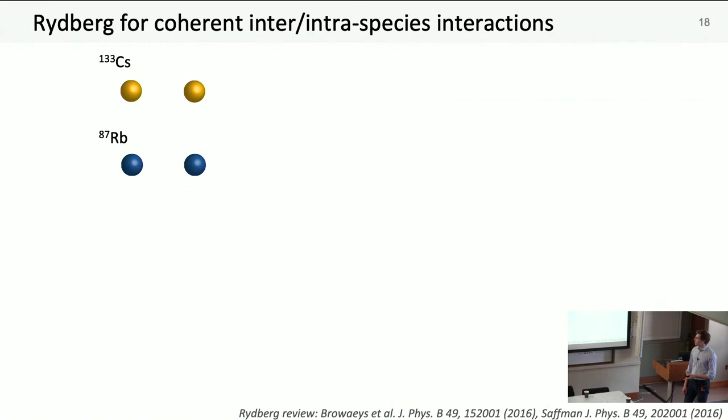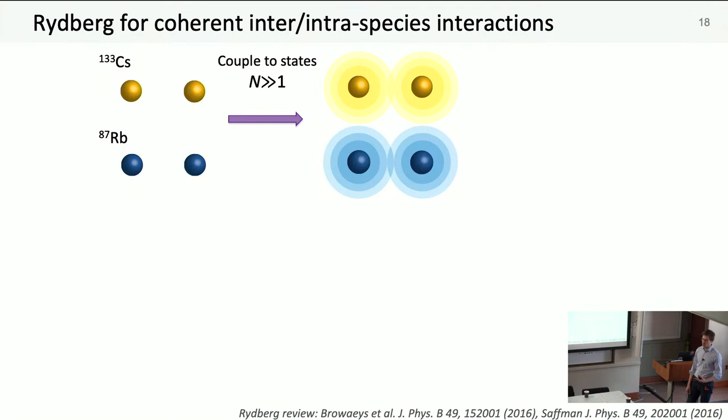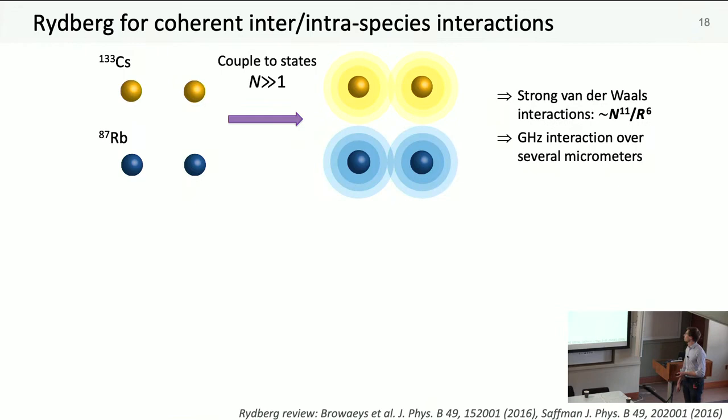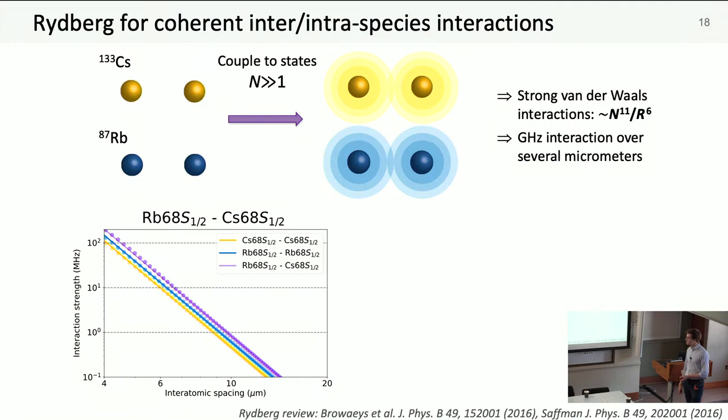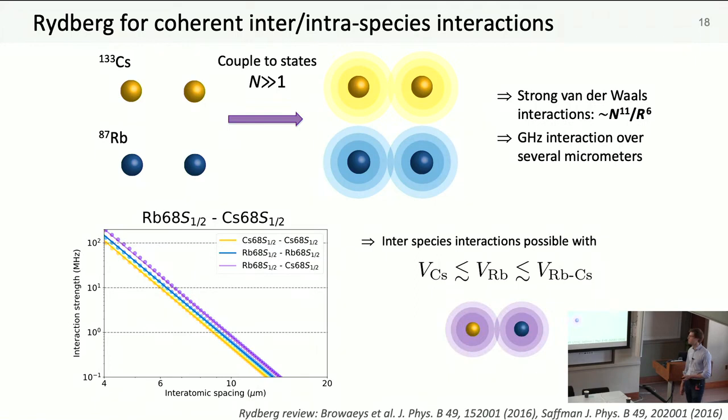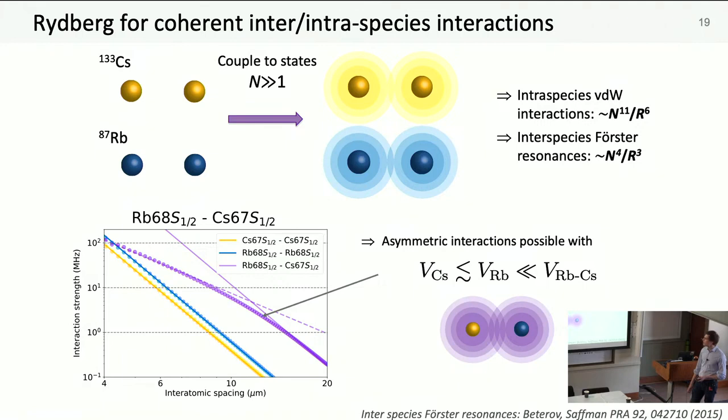I want to introduce some quirks and features of dual species interactions. We're talking about exciting to high-lying n states, always exciting to s states. When we have equal n, we get strong van der Waals interactions scaling n to the 11 over r to the 6. An interesting thing for dual species is you now get Förster resonances: near-degenerate Rydberg pair states that can have resonant dipole-dipole interactions, scaling n to the 4 over r cubed. Just dropping from 68-68 to 68-67, you go to a qualitatively different regime with strong asymmetry between inter-species and intra-species interactions.